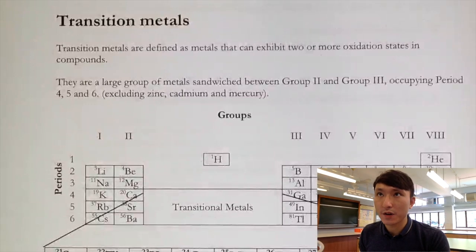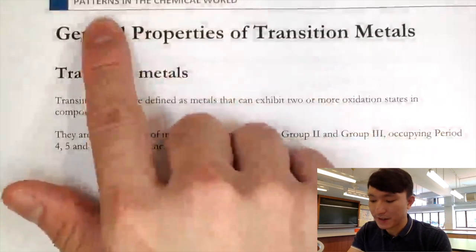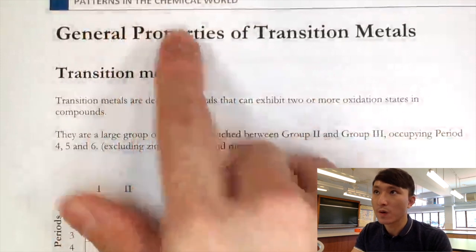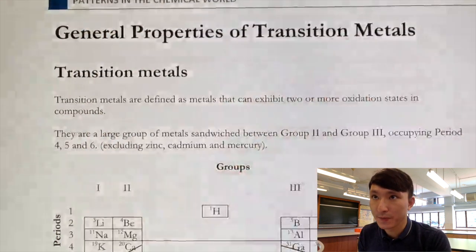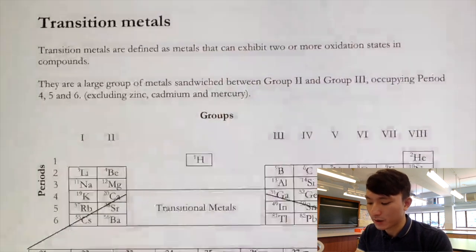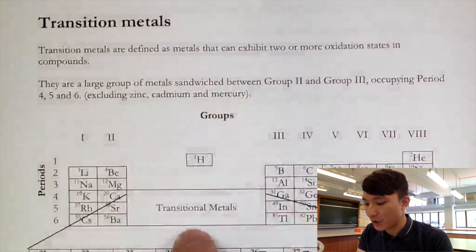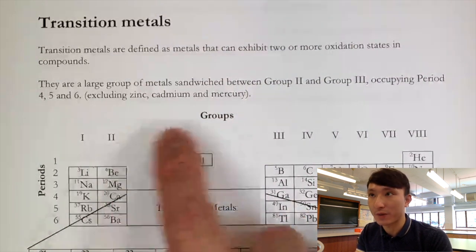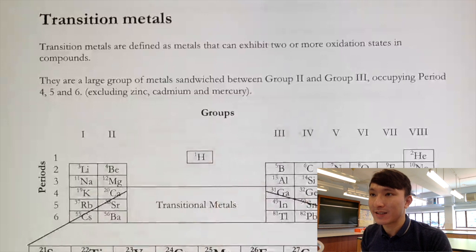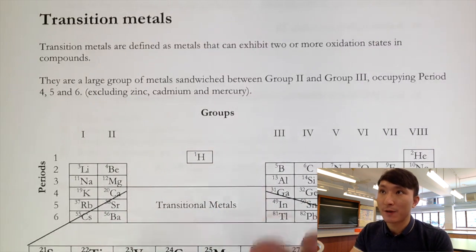In this video we are going to continue on the topic 'Patterns in the Chemical World' and move on to transition metals. First of all, transition metals, if you look at the periodic table, are a large group of elements sandwiched between Group 2 and Group 3. They are separated because they have some special chemistry which we are going to talk about.